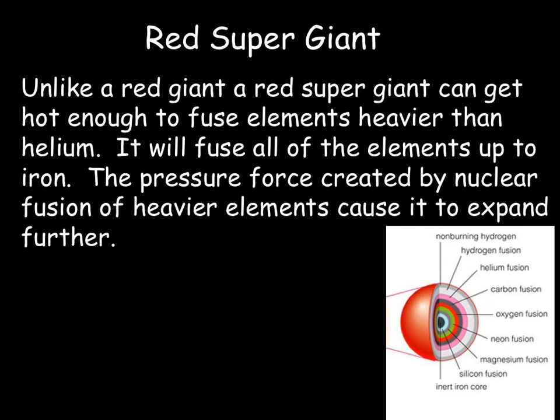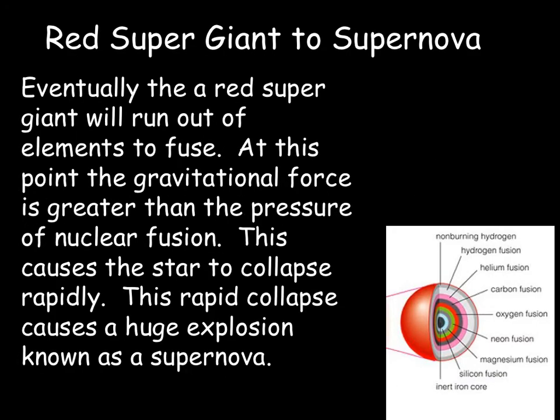The central part, known as the core, becomes an iron core — and you cannot fuse iron because it doesn't produce energy. Eventually you end up with a large iron core in the centre and nuclear fusion dwindles out in the other areas of the red supergiant until gravity causes it to collapse. A red supergiant will run out of elements to fuse; at that point the gravitational force is greater than the pressure force of nuclear fusion, causing the star to collapse quite rapidly. This rapid collapse causes a huge explosion known as a supernova.